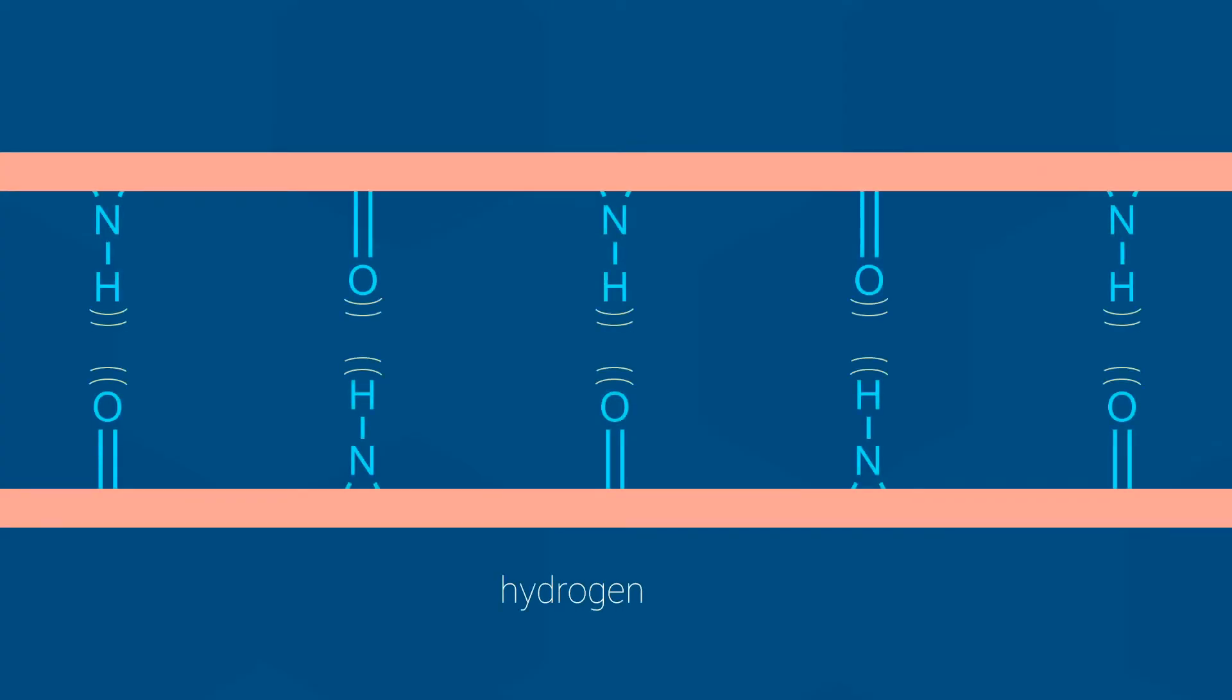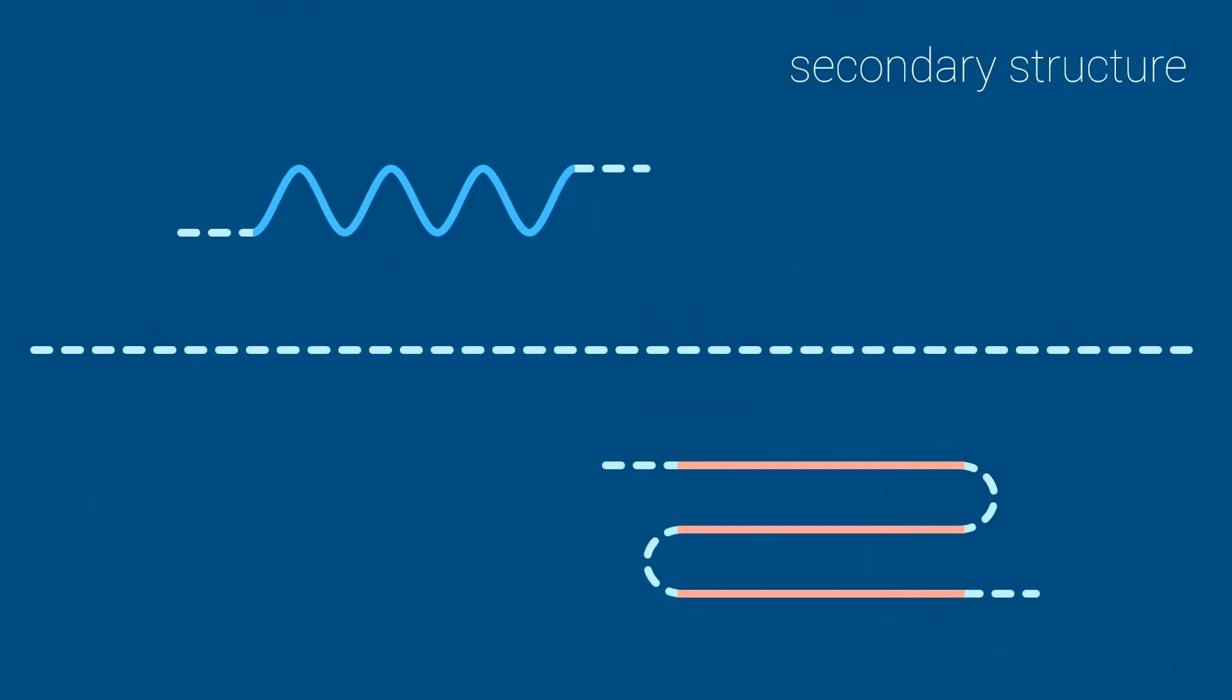On the other hand, beta sheets use hydrogen bonds between neighboring strands in the sheet. You don't really need to worry about the details of this until second year biochemistry. Here in Biology 112, you just need to keep in mind that secondary structures form due to hydrogen bonds between backbone atoms.